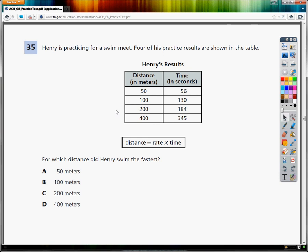This is the 8th grade TCAP practice test, question number 35. Henry is practicing for his swim meet and four of his practice results are shown. For which distance did Henry swim the fastest?